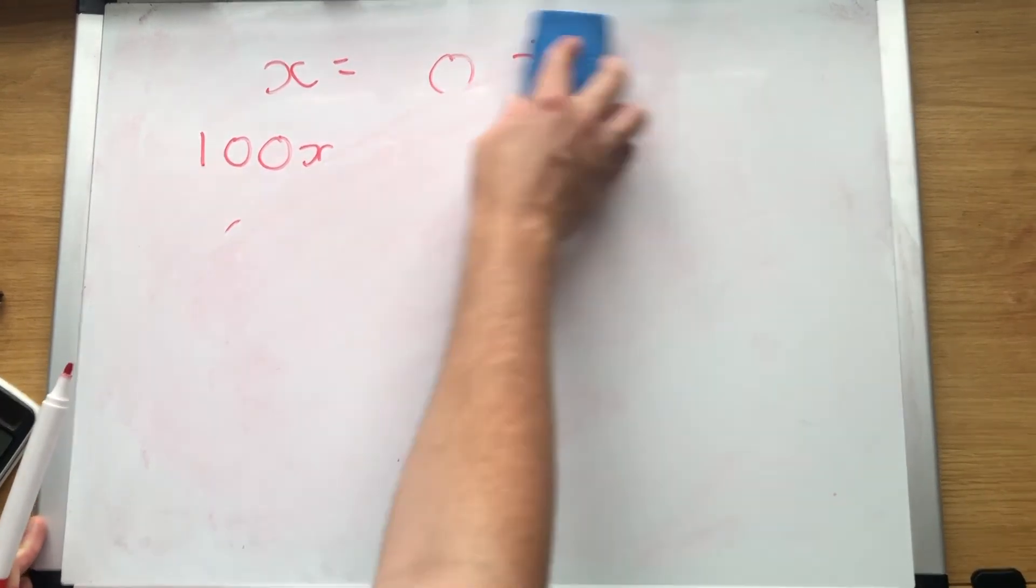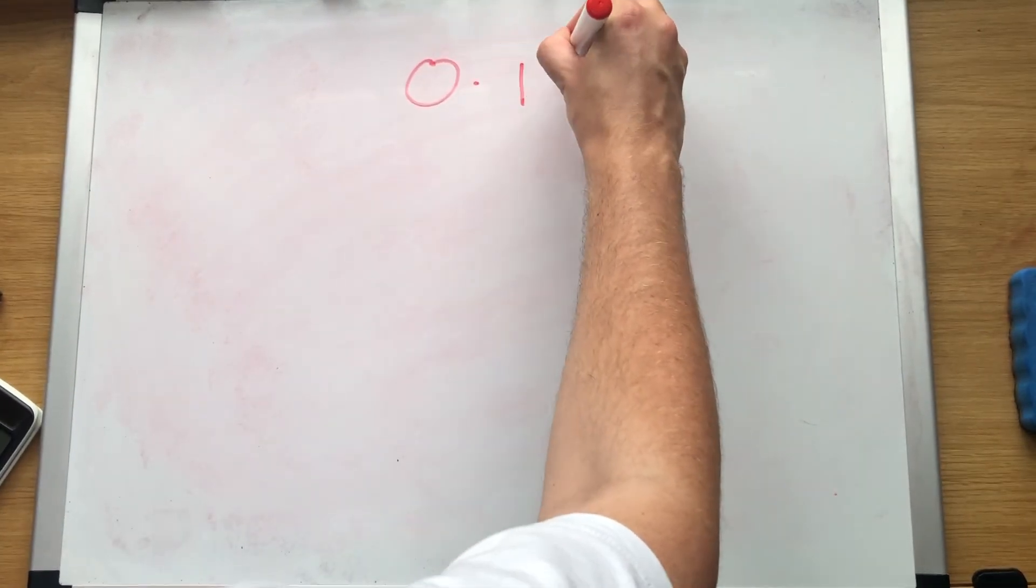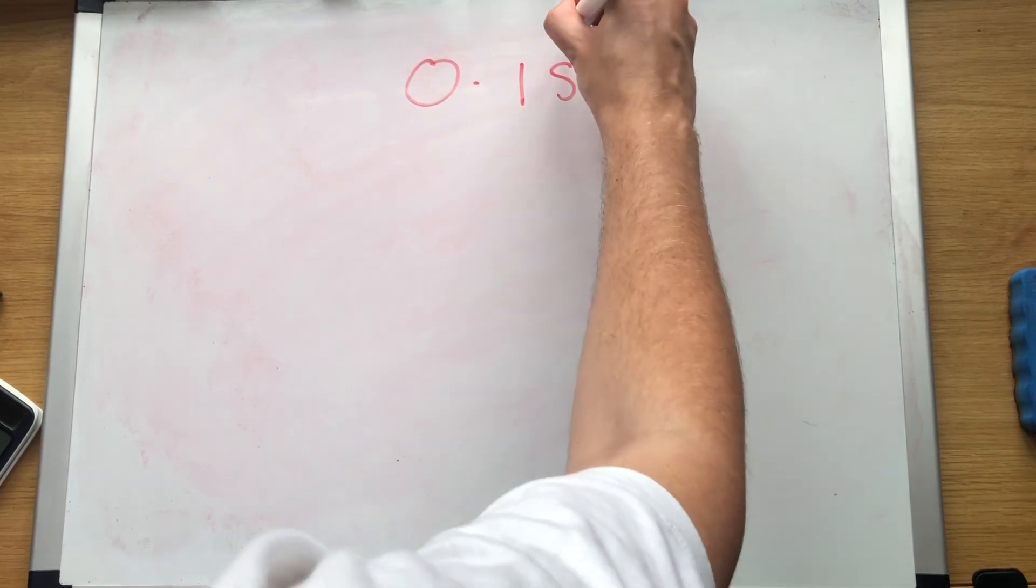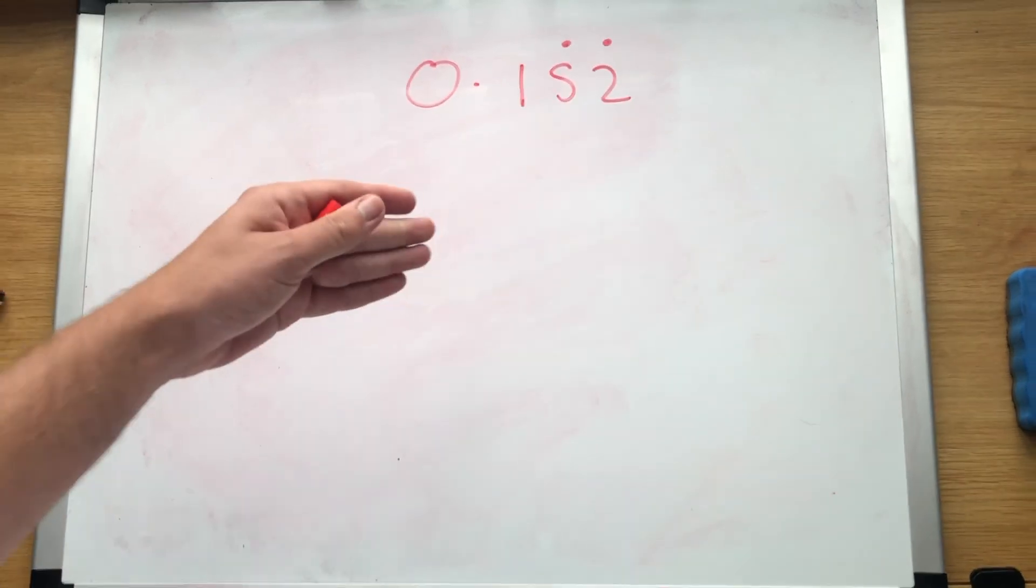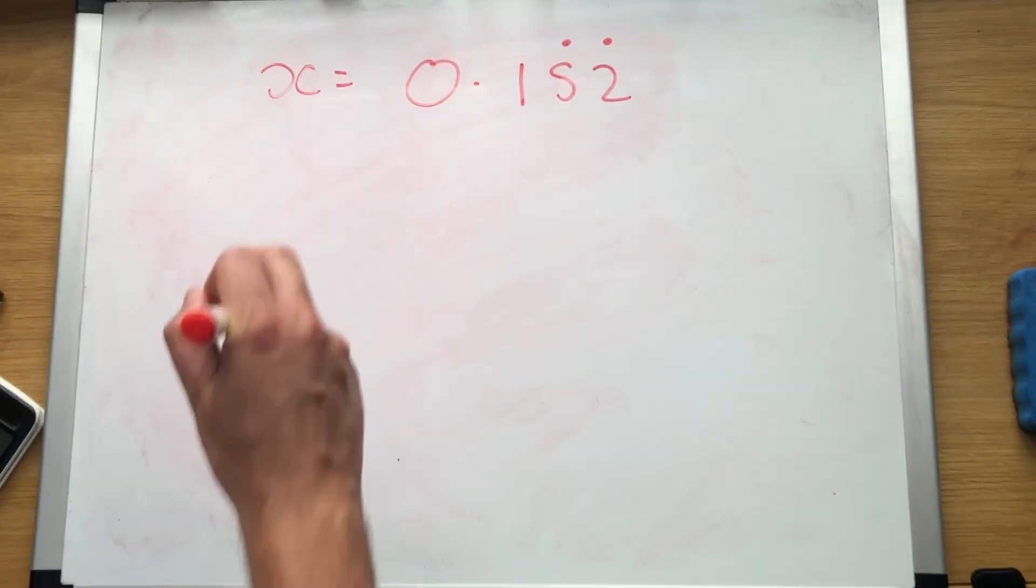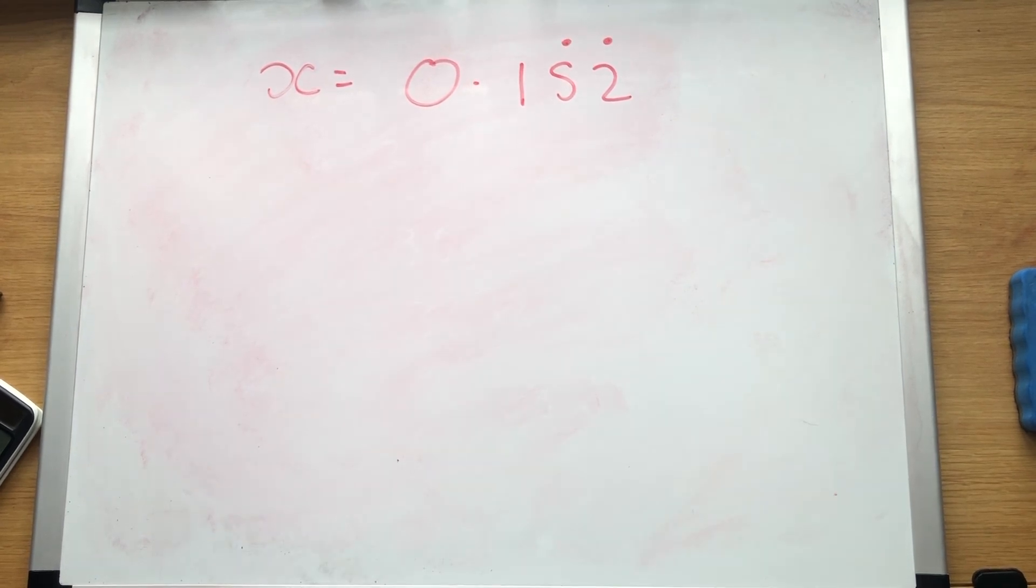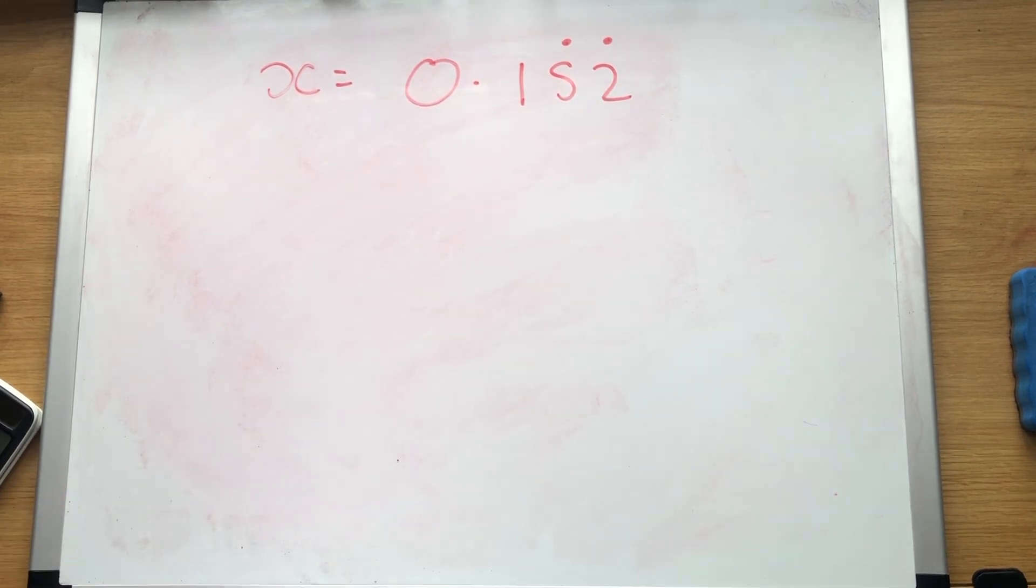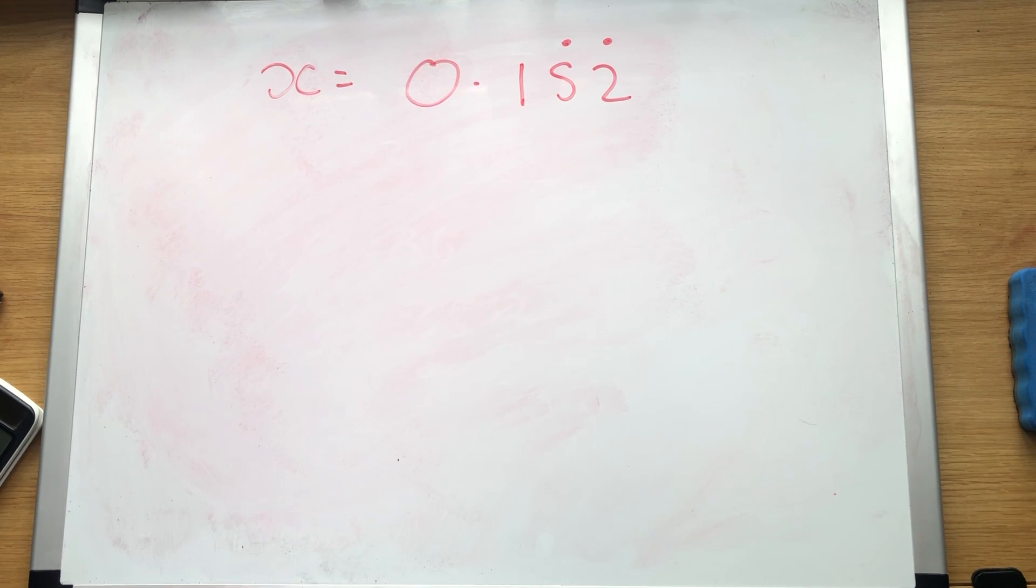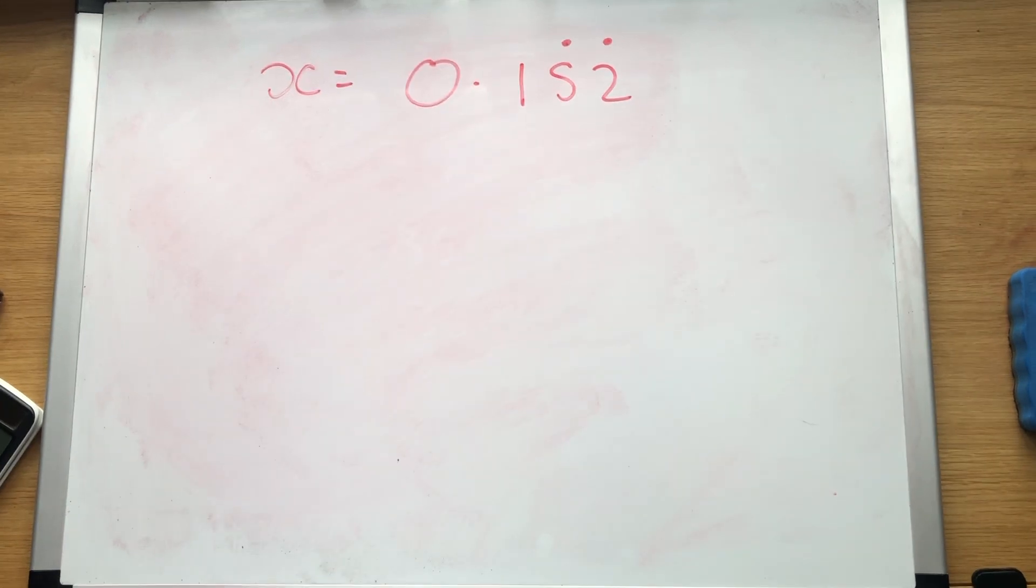One final example. Let's do 0.152. Our first step: x equals. It's always x equals. Our second step: check that everything after the decimal point is recurring. Well here it's 1, 5, 2, 5, 2. But the 1 isn't recurring. So we can't solve this one yet. The good news is, is in the next video I'll be going over how to solve questions like this. So come back then when we'll finish off this topic.